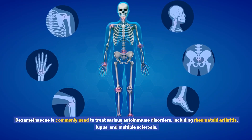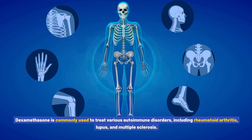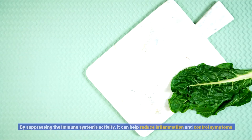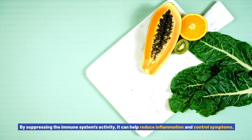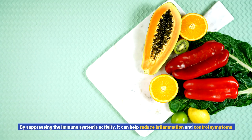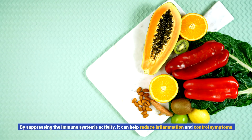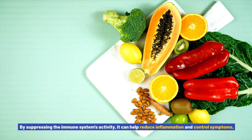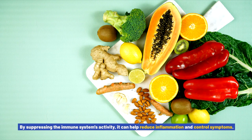Autoimmune disorders: Dexamethasone is commonly used to treat various autoimmune disorders, including rheumatoid arthritis, lupus, and multiple sclerosis. By suppressing the immune system's activity, it can help reduce inflammation and control symptoms.